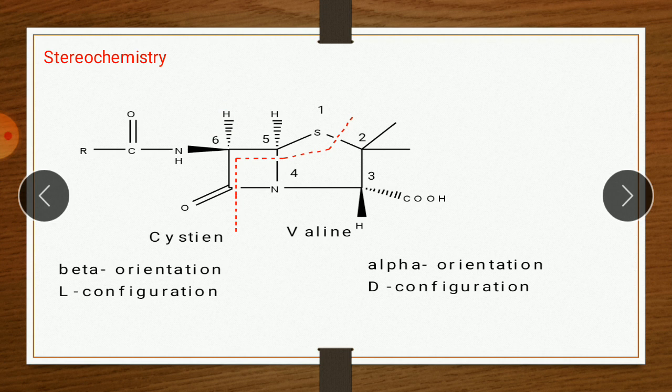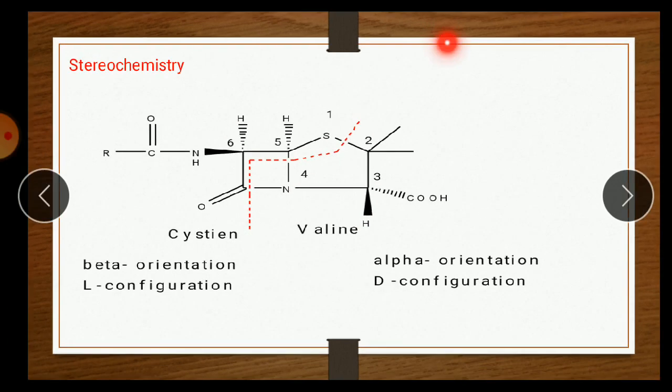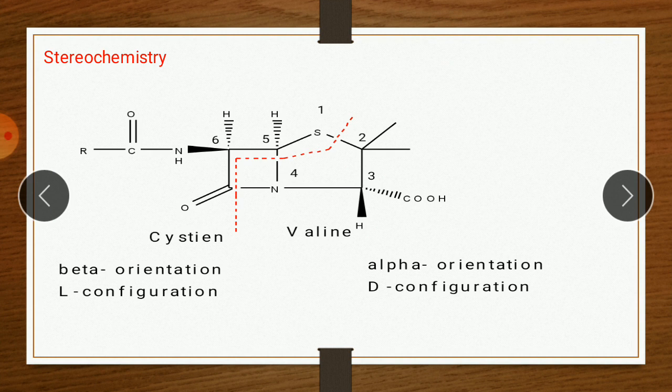The basic penicillin ring is made up of two amino acids: cysteine and valine — cysteine contributing one part and valine the other, as shown by the red dotted line separator. The structure has three chiral centers at carbon-3, carbon-5, and carbon-6.